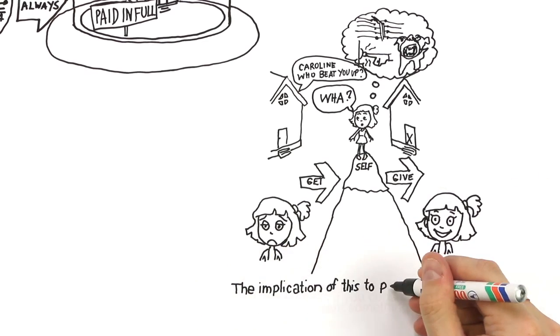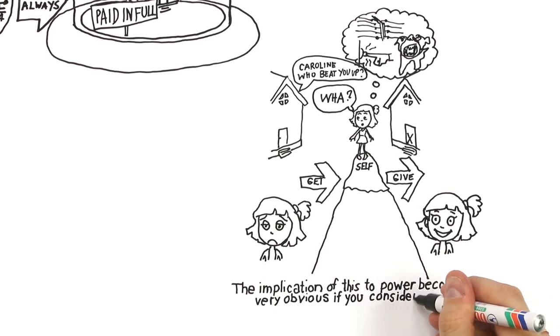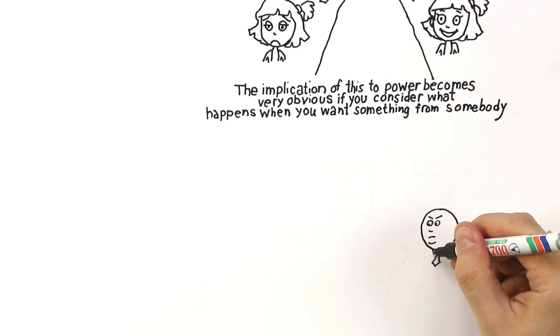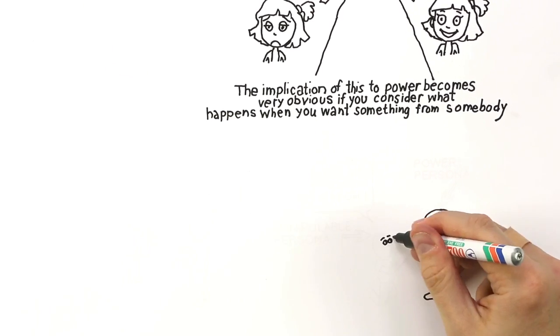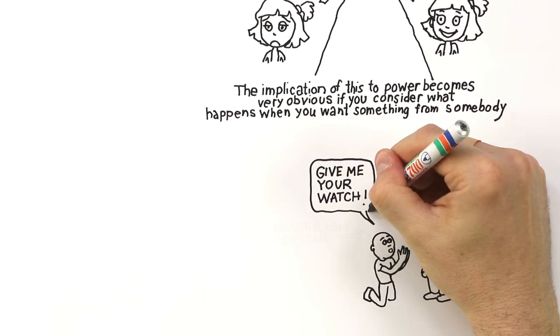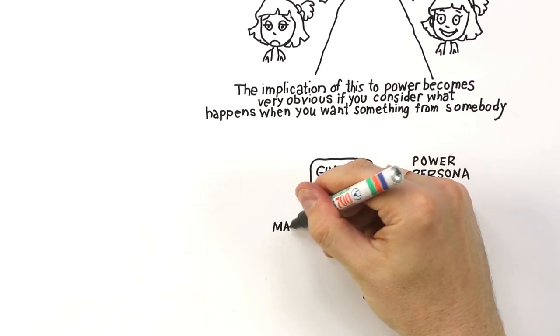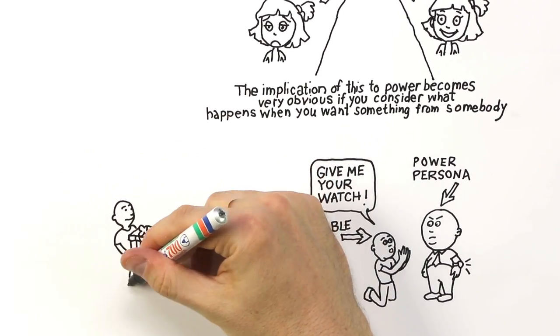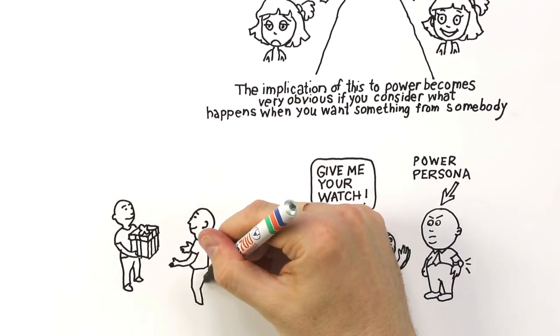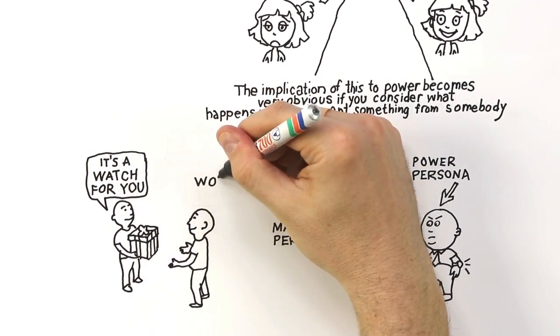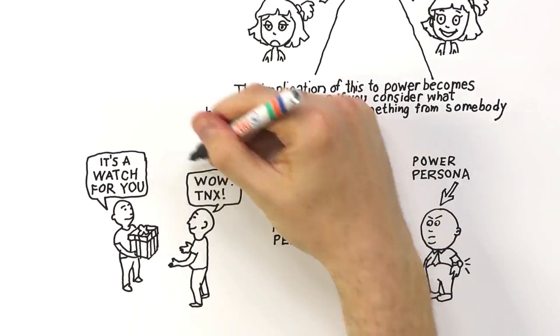The implication of this to power becomes very obvious if you consider what happens when you want something from somebody else. Say you want somebody's watch. Clearly, their ability to withhold the watch gives them power over you. So if you want something from somebody else, their ability to withhold what you want gives them power over you and makes you manipulable. Whereas if I want to give somebody something, what I'm trying to give to them, they have no power over. In other words, my weakness is based on what I'm getting from somebody and my power is based on what I'm willing to give or lose.